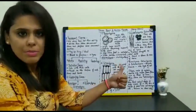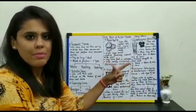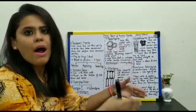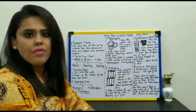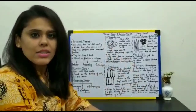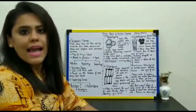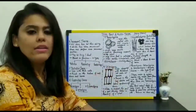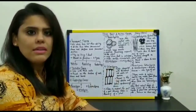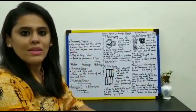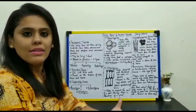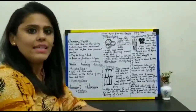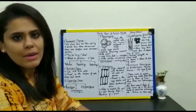Apical meristem, also called as terminal meristem, and cambium meristem, also called as lateral meristem. Apical is present at the apexes or the tips. Lateral is present at the cambium or the bark of the stem. An important characteristic of meristematic tissue is that it lacks vacuoles. The reason is that since those cells are involved in the process of cell division, vacuoles would cause hindrance in that process.